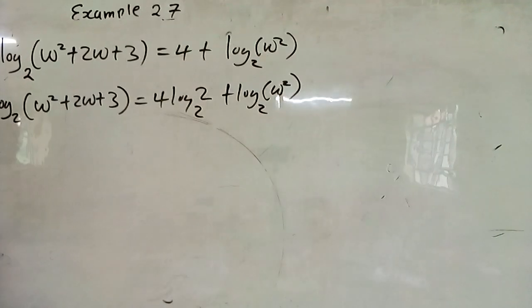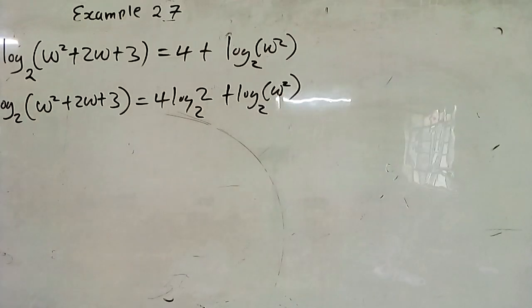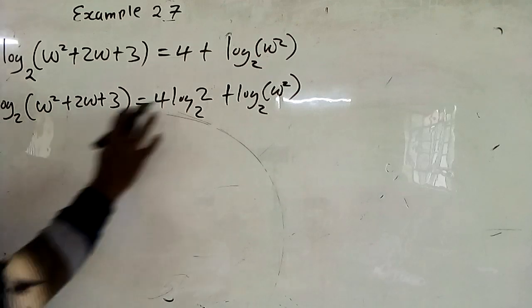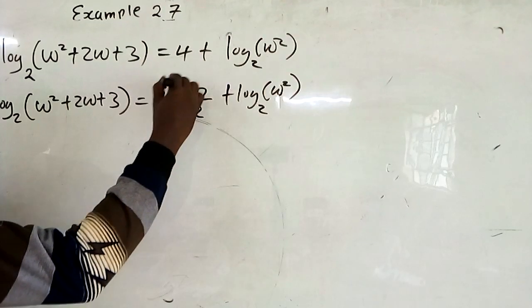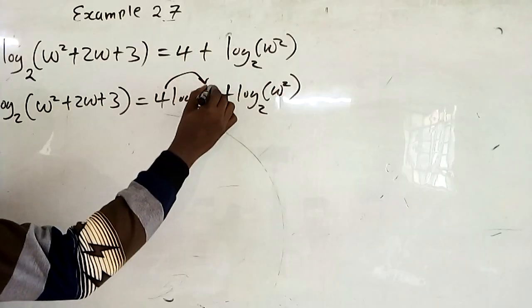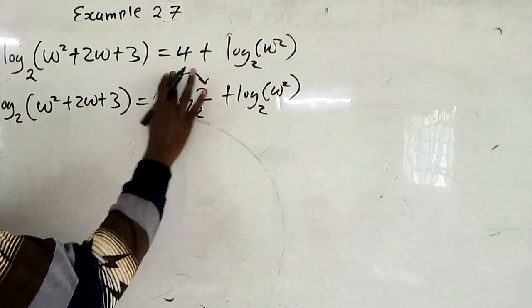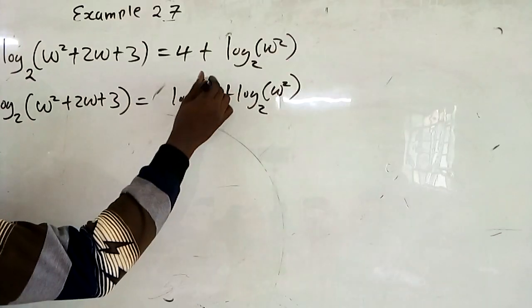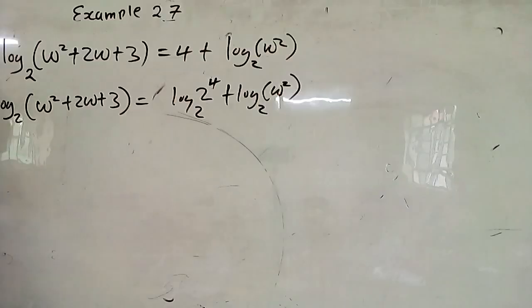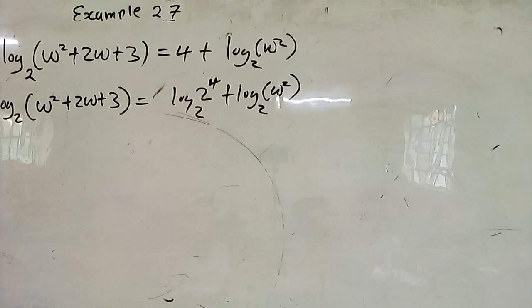After having the same base throughout, you get rid of the coefficient. There is no coefficient on the log terms, but the coefficient here is 4 — 4 becomes the power. So if you take 4 to become the power, you have log of 2 raised to the power 4.